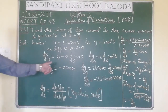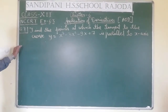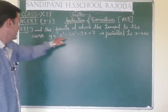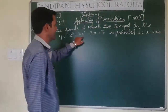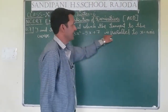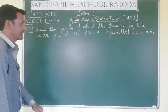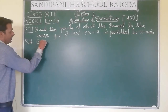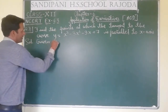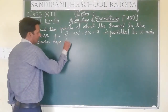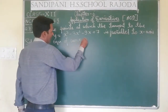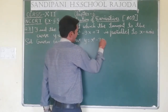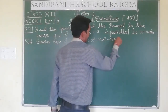Question 6 is now over. Now see question number 7: Find the points at which the tangent to the curve y = x³ - 3x² - 9x + 7 is parallel to the x-axis. In solution, the given equation of curve is y = x³ - 3x² - 9x + 7.